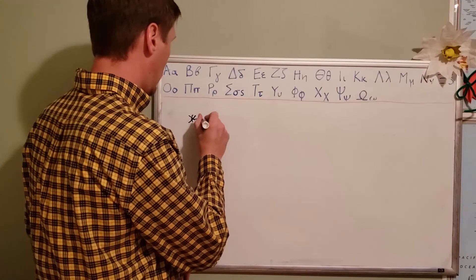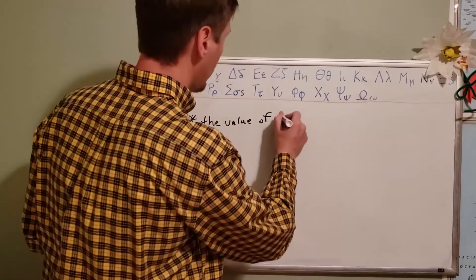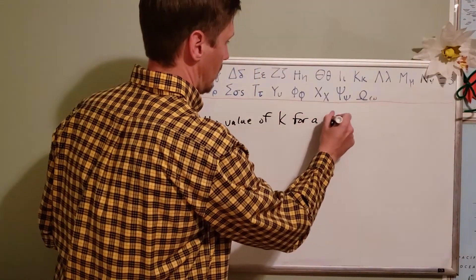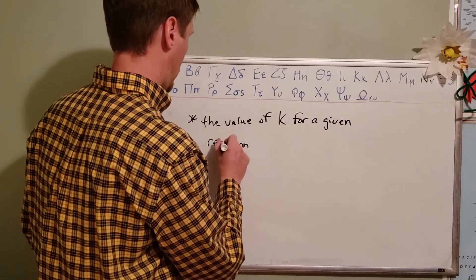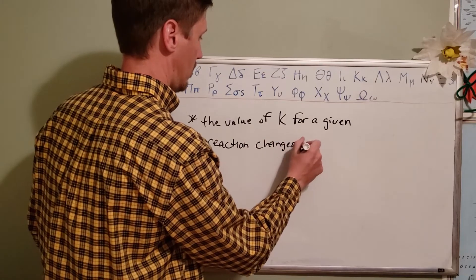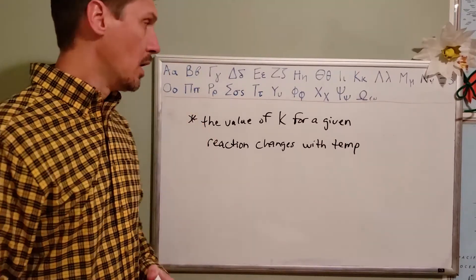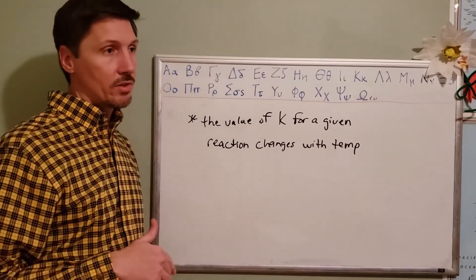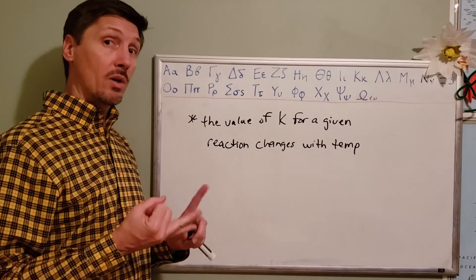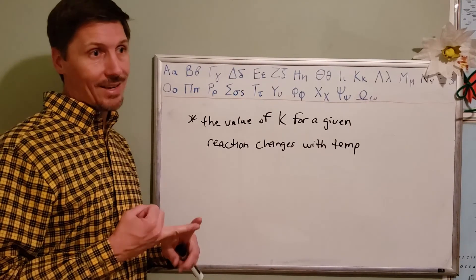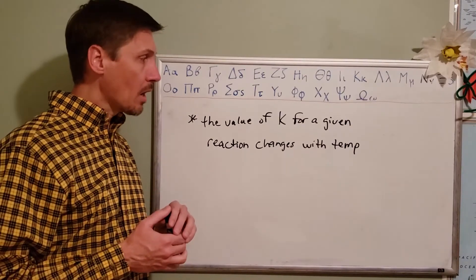That's pretty much it. The other thing that we just need to make sure that we remember is that the value of K for a given reaction changes with temperature. We said the same thing when we used the rate equation. So both of these are similar in that sense—the value will change for the reaction with temperature. And also, just like with the rate equation, you have to pay attention to your units and make sure that you're canceling out your molarity units properly. That unit may vary between equations.